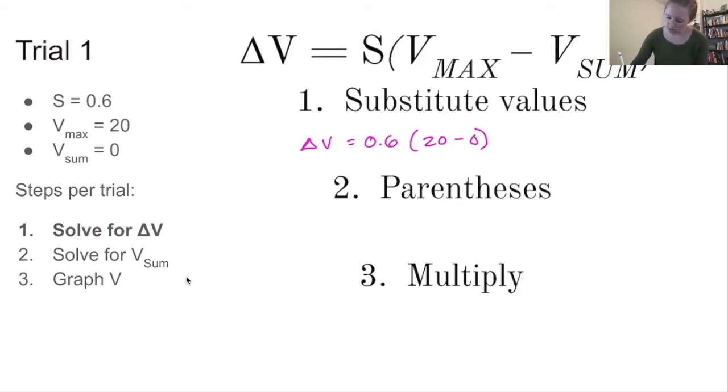The next step for us to do is calculate what is within the parentheses. So 20 minus 0, easy enough, we have 20. So that last step is now going to be to take our 0.6, our salience, and multiply by what was in our parentheses, which in this case was 20. In this case, 0.6 times 20 is going to be 12.